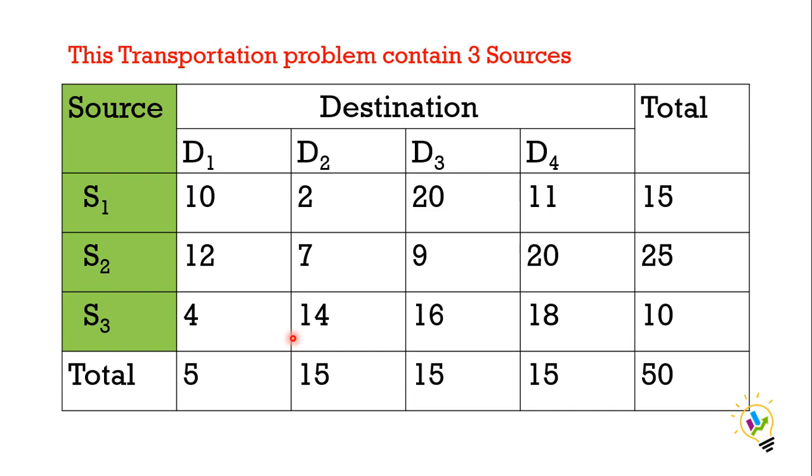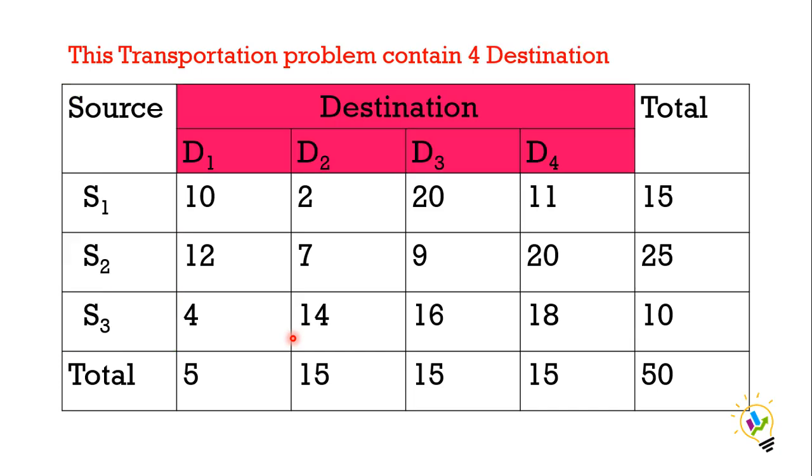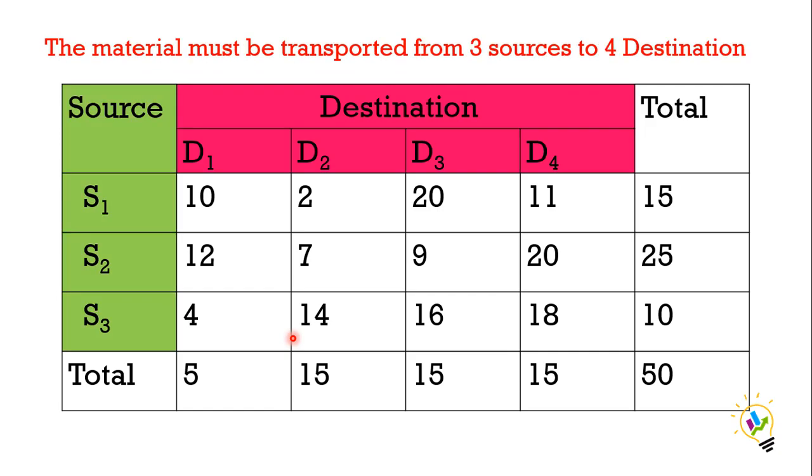In this transportation problem, we have three sources. The green color cells are sources S1, S2, and S3. And we have four destinations D1, D2, D3, and D4. The material must be transported from three sources to four destinations.